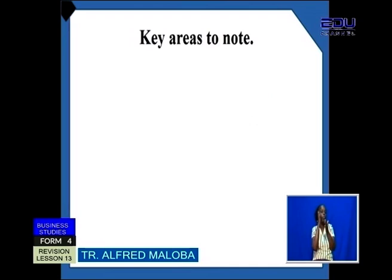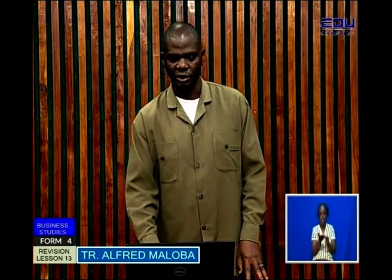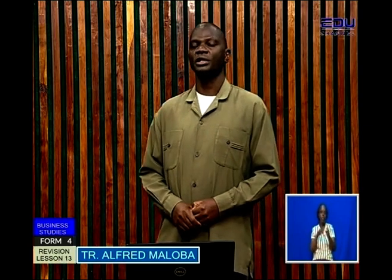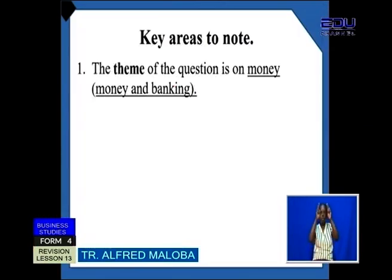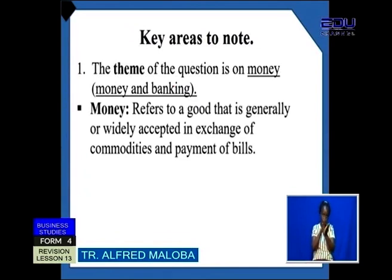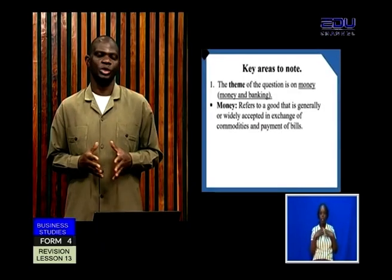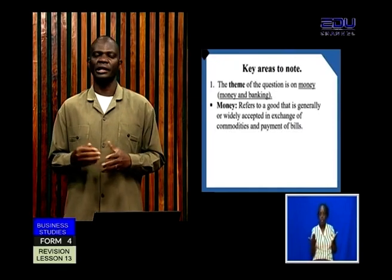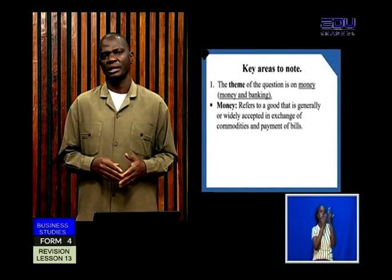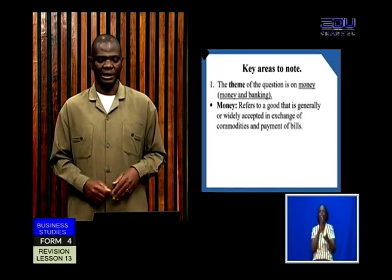So what are we supposed to note? There are key areas that we need to note before we attempt the question. One, the theme of the question is on money, under the topic Money and Banking. Once you have noted that, we need to remind ourselves what money is. In business, we refer to money as a good that is generally accepted or widely accepted in exchange of commodities and payment of bills. So anything that we can accept generally, and then we can get goods and services from it in exchange, or someone can accept as you pay your bills, like water bills and things like that — we shall term that as money.